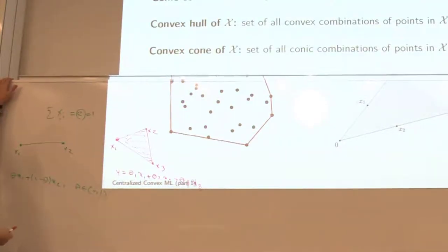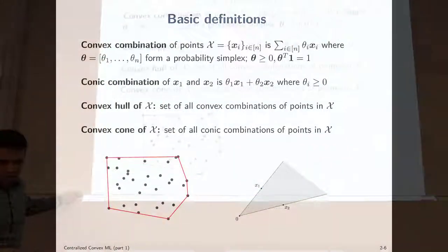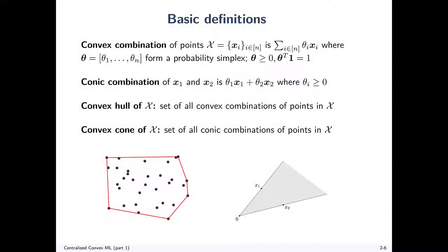This is essentially convex combinations. Conic combination — we're going to need these definitions later on — is similar to convex combination when you drop the constraint on the probability simplex. You allow theta_1 and theta_2 to be any positive number, so it's going to look like a cone. And zero would be inside the set of all conic combinations by setting theta_1 and theta_2 equal to zero.